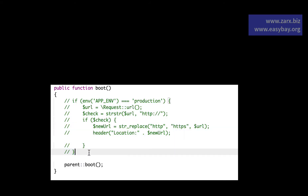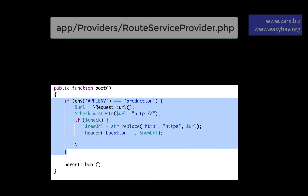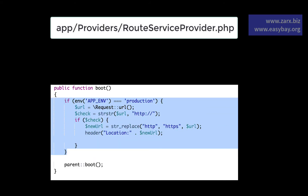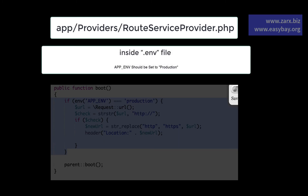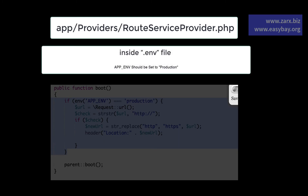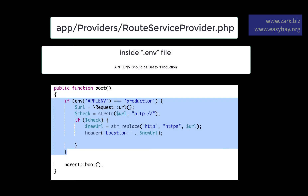We need to go and add this piece of code in the boot function in the given directory. Mainly what we are doing is checking the environment variable — in your Laravel project, if you are in production, only then fire this code. We get the URL using the dollar url variable.